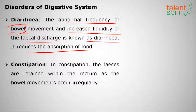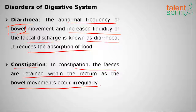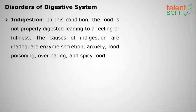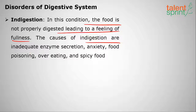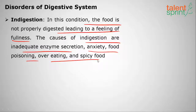Diarrhea is the abnormal frequency of bowel movements with increased liquidity of the fecal discharge; it reduces the absorption of food and is more frequent in children. Constipation occurs when fecal matter is retained within the rectum due to irregular bowel movements. Indigestion is when food is not properly digested, leading to a feeling of fullness. Causes of indigestion include inadequate enzyme secretion, anxiety, food poisoning, overeating, and spicy food. That concludes our overview of the human digestive system.